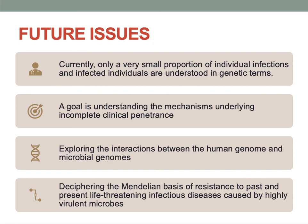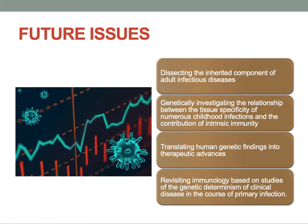Another area is deciphering the Mendelian basis of resistance to past and present life-threatening infectious diseases caused by highly virulent microbes — current examples include Ebola virus disease, coronavirus respiratory disease, avian flu, and swine flu; past examples include plague and poliomyelitis. Another area is dissecting the inherited component of adult infectious diseases, which will be difficult to disentangle from the contribution of somatic immunity with its genetic and epigenetic components — particularly important for diseases such as tuberculosis, transmitted by sick adults following reactivation from latency. Another area is genetically investigating the relationship between the tissue specificity of childhood infections and the contribution of intrinsic immunity.